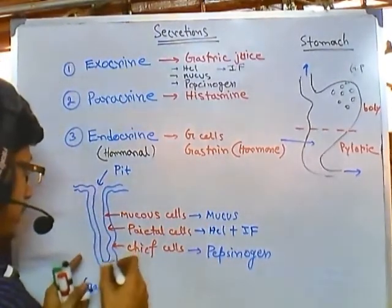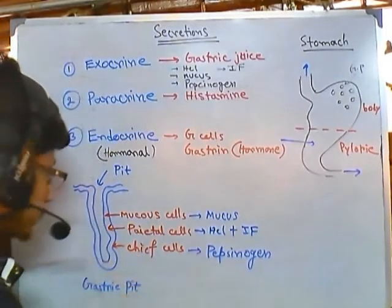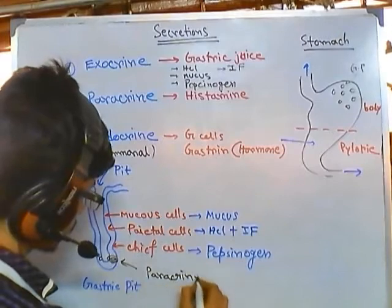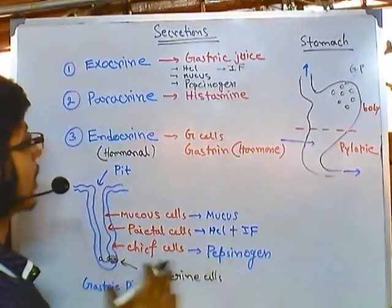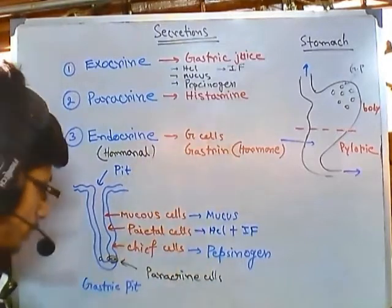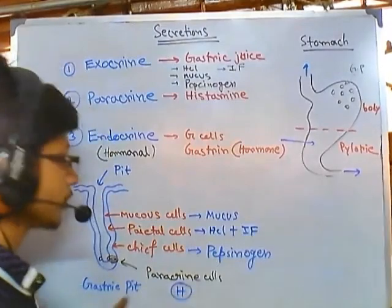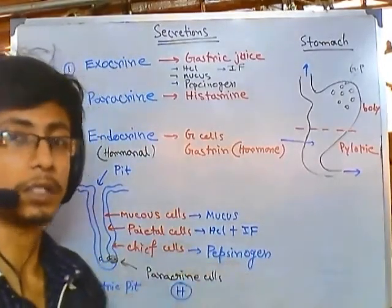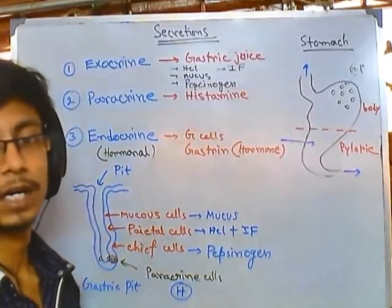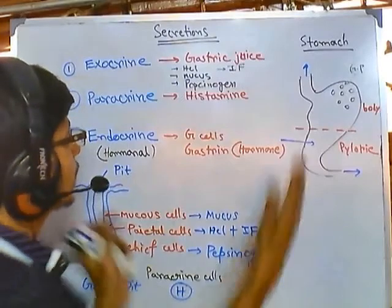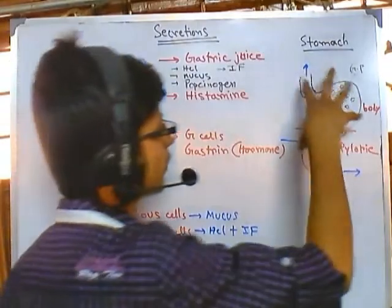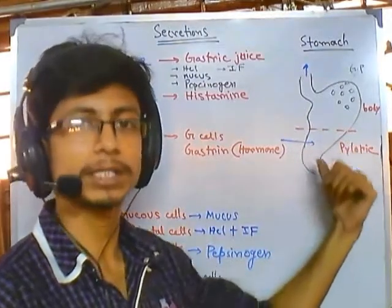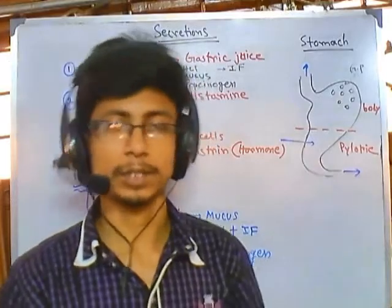Mucus cells secrete mucus, and chief cells secrete pepsinogen. There are other cells present — paracrine cells, both intrinsic and extrinsic — and these paracrine cells secrete histamine molecules. These cells are arranged in the gastric pit in a particular orientation and secrete all the mediators and molecules required during the digestion process. All secretions come from various regions except for gastrin, which is secreted by G cells present in the pyloric section. The functions of all of these will be covered later.